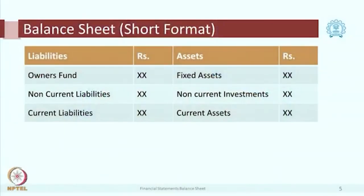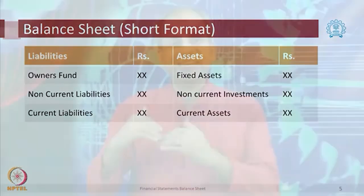Just to get a feel of the balance sheet, this is the format in short. Starting from the asset side — the first one is fixed assets, which is the various infrastructure of the company. The second one is non-current investments, which are long-term investments lasting more than 1 year outside our business. The third one is current assets — assets intended to be held for less than 1 year. These 3 are the major assets or resources of the undertaking. On the other side we have liabilities.